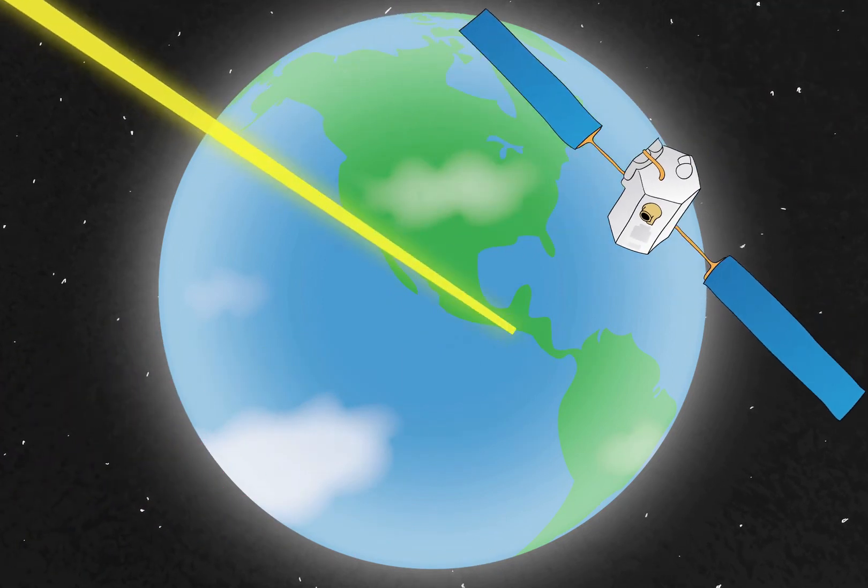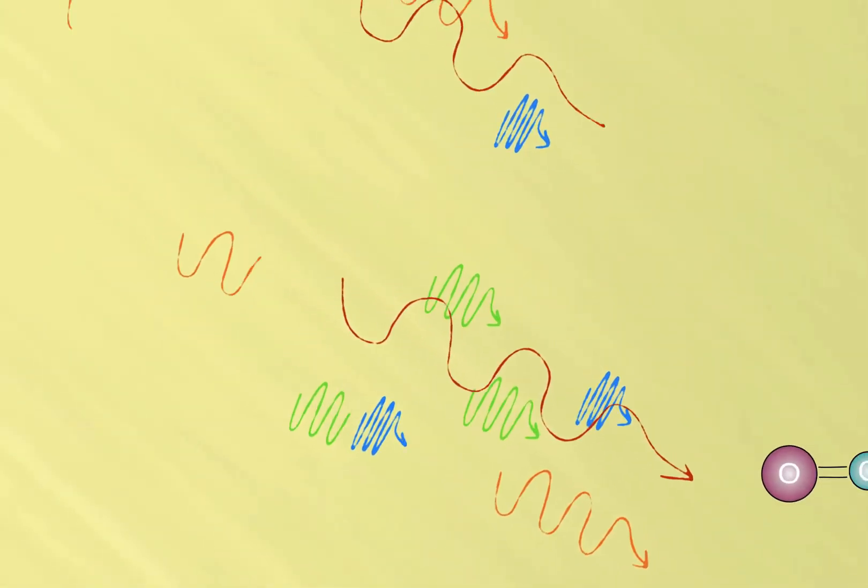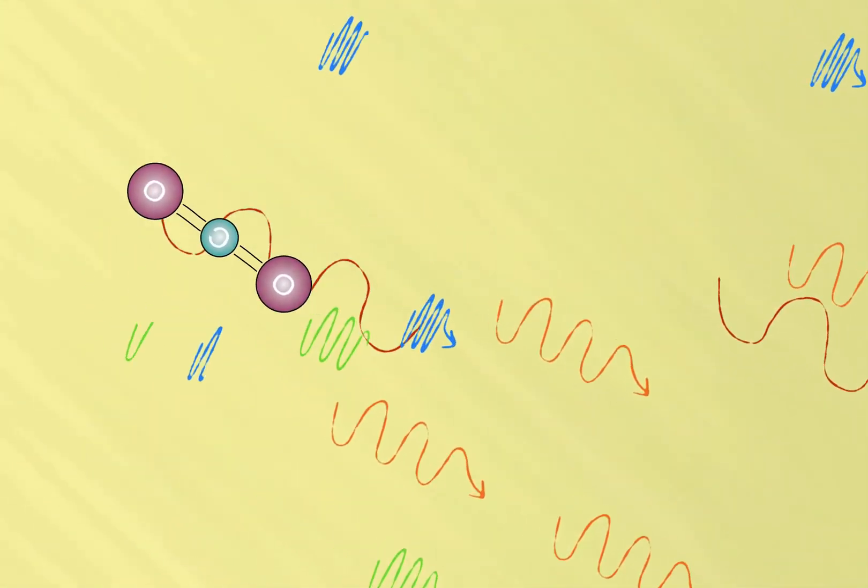How will it do that? By measuring the sunlight that bounces off the Earth's surface. On its way through the atmosphere, this sunlight interacts with CO2 molecules in the air.